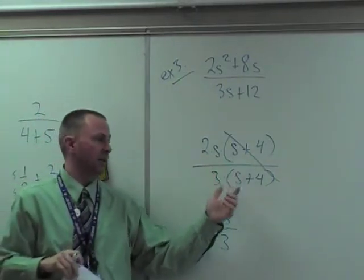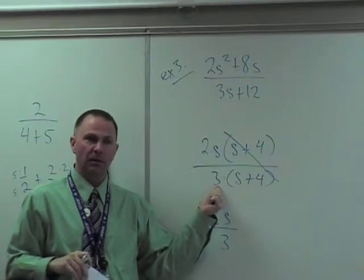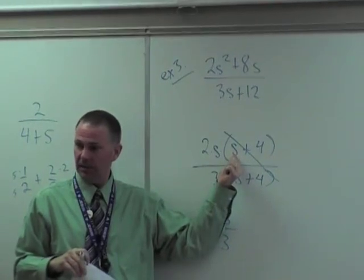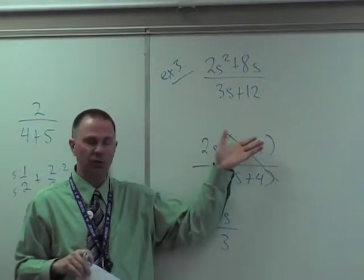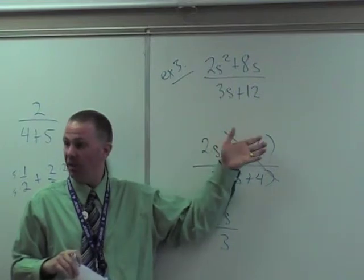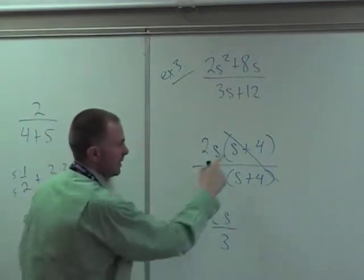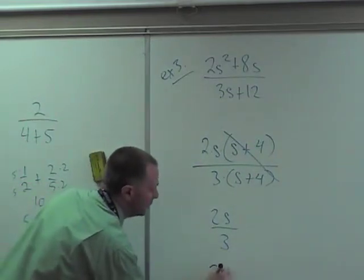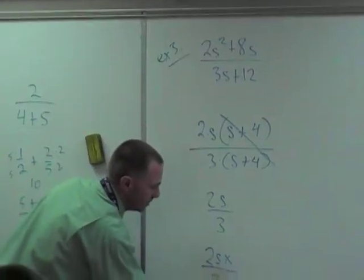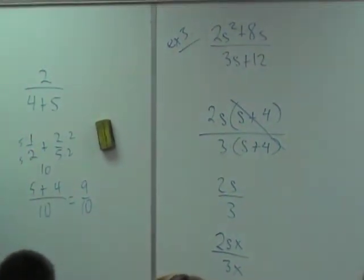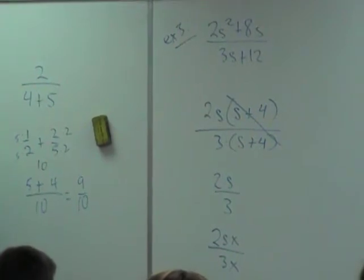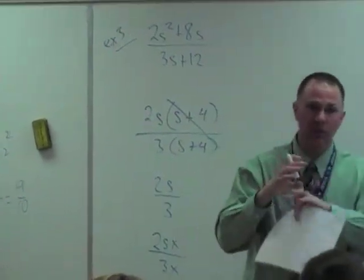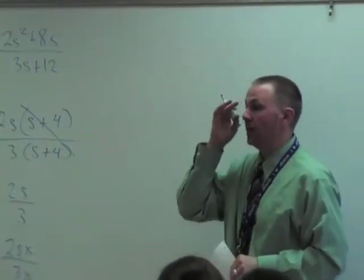Now I can't take something here and reduce it with one piece in here. I can't do that. Just look at your parentheses as one thing. Look at it like this: let's say s plus 4 is x. So really what I have here is 2sx over 3x. If you look at it like that, then you understand, and the x is going to cancel out. So look at parentheses as one thing. Don't look at it as multiple terms inside.